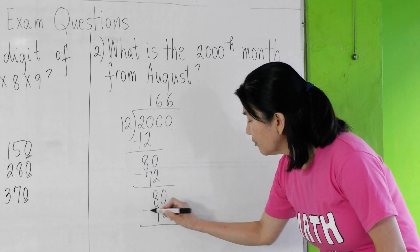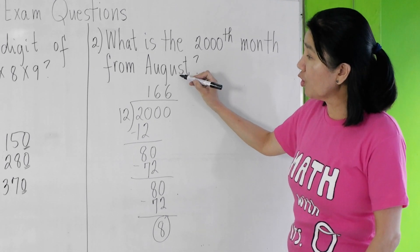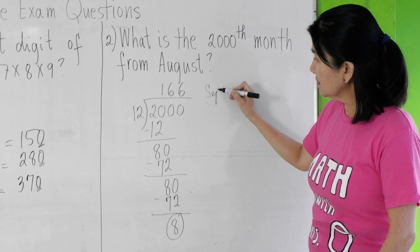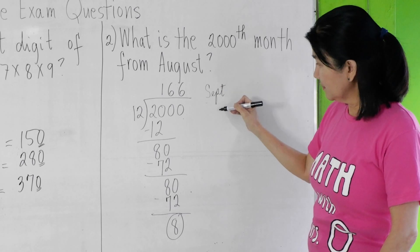80 minus 70 is 8. Bring down 0 again. 80 divided by 12 is 6. 6 times 12 is 72. There, you minus again. We get 8. That would mean from August, you count the months.